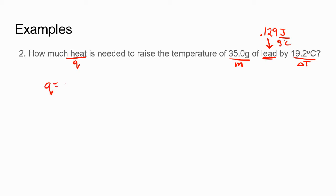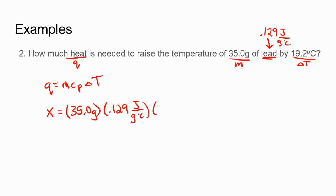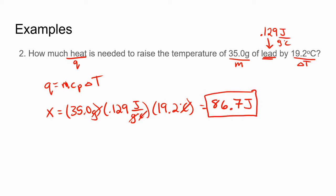Using Q = MCpΔT from page three, we plug in our numbers. Q is what we're looking for, so x equals 35 grams times 0.129 joules per gram Celsius times 19.2 degrees Celsius. Since mass and temperature both have three significant figures, our answer should be three significant figures: 86.7. Grams cancel, Celsius cancels, leaving us with joules — so 86.7 joules is needed.